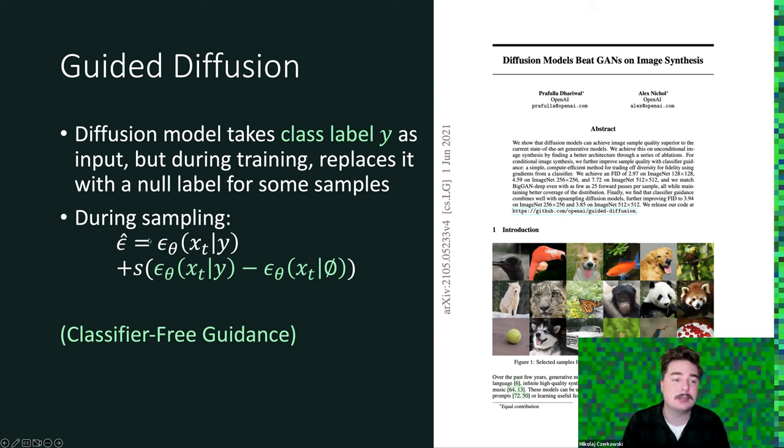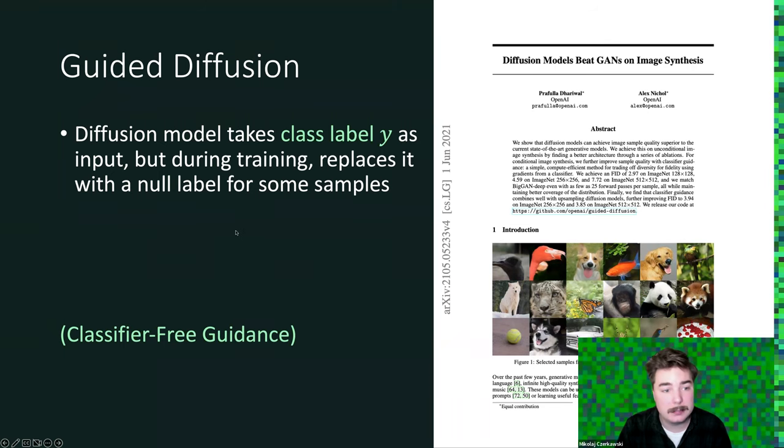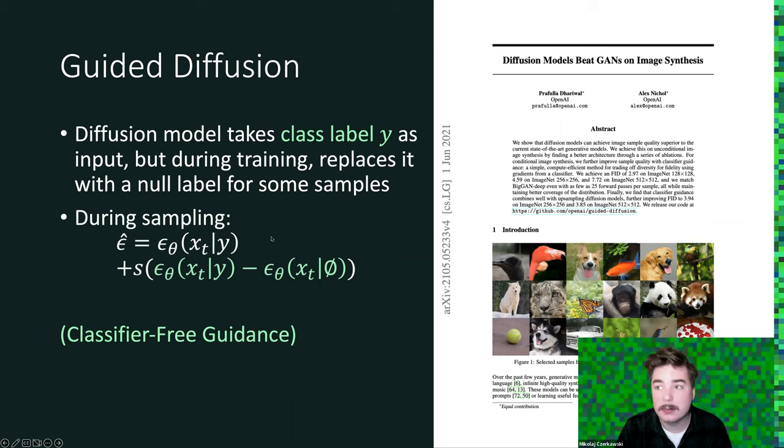This additional term is the difference between the noise predicted with the label y and the noise predicted with a null label for the same sample.